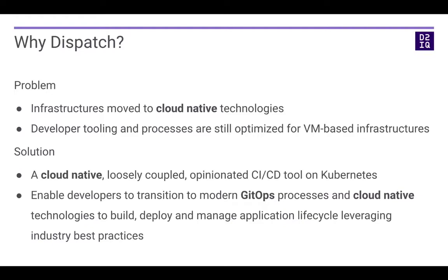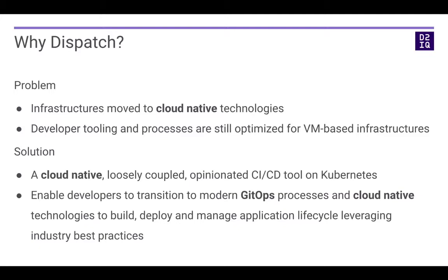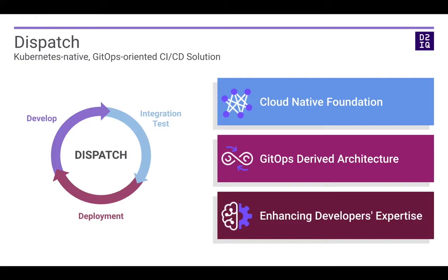The goal is to build a cloud-native, loosely coupled, opinionated CI/CD tool on Kubernetes, and we want to enable developers to use Dispatch to transition to modern GitOps processes and cloud-native technologies. Dispatch has three highlights: first, it has a cloud-native foundation; second, it is driven by GitOps, so the architecture is GitOps-oriented; third, the goal is to enhance developers' expertise. I'm going to go through all three highlights one by one in the remainder of this talk.